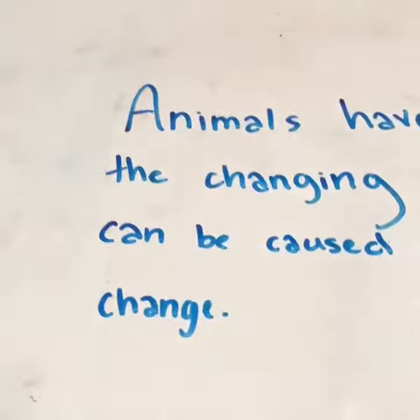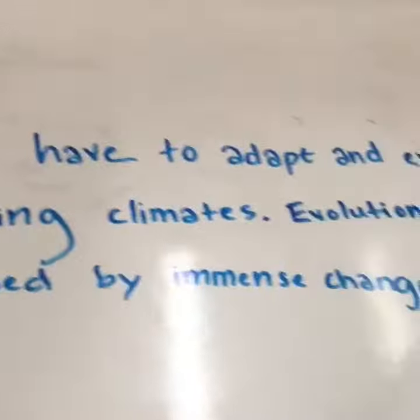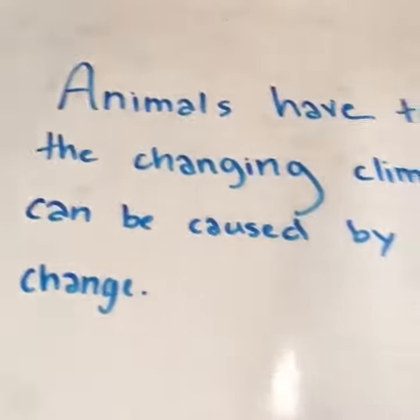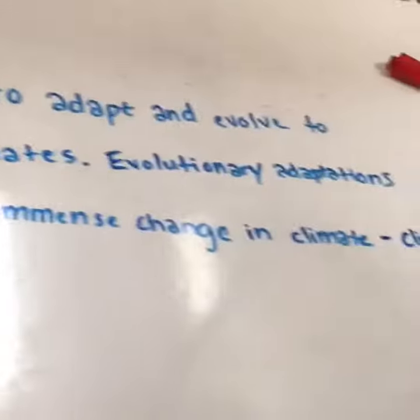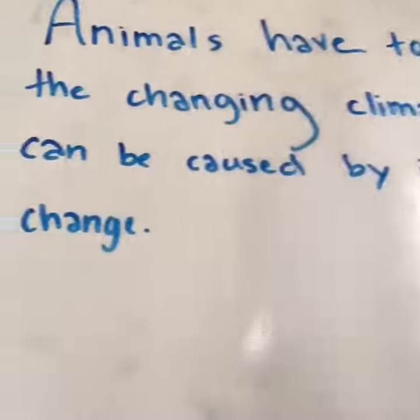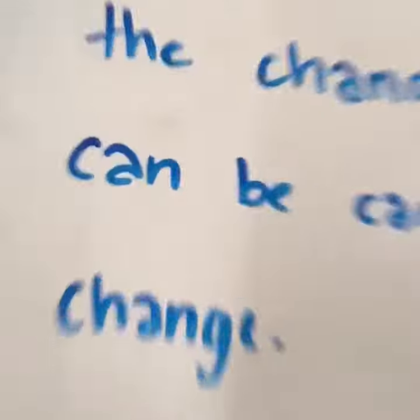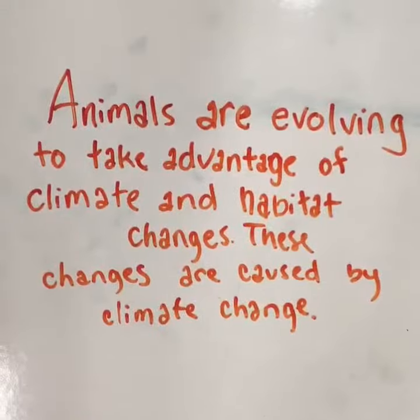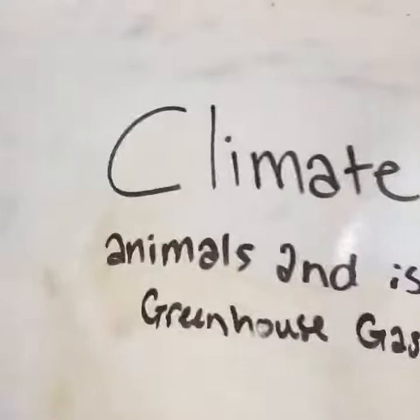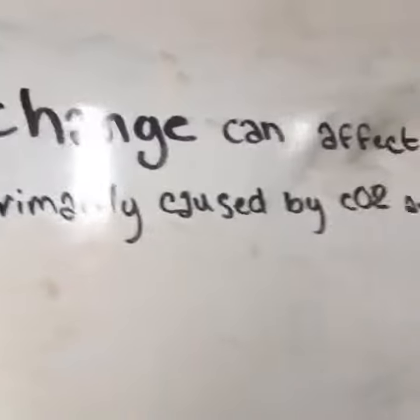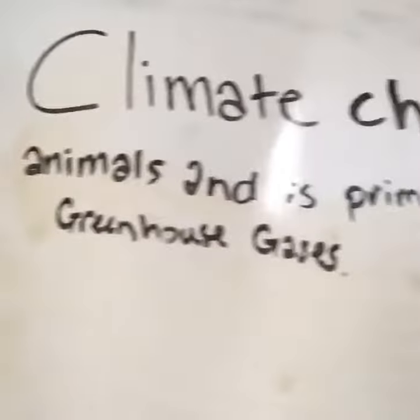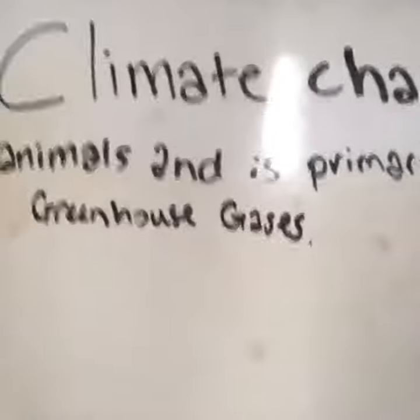Animal adaptations. Animals have to adapt and evolve to the changing climates. Evolutionary adaptations can be caused by immense change in climate — climate change. Animals are evolving to take advantage of climate and habitat changes. These changes are caused by climate change. Climate change can affect animals and it's primarily caused by CO2 and greenhouse gases.